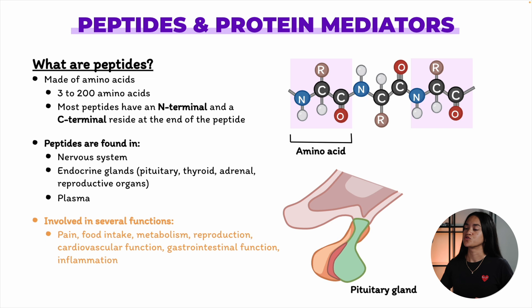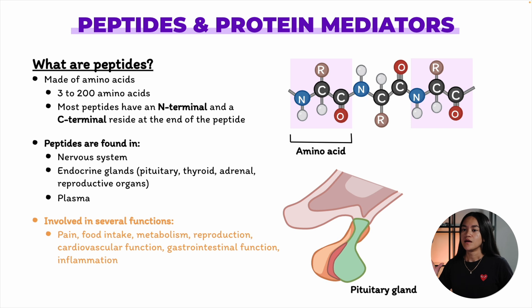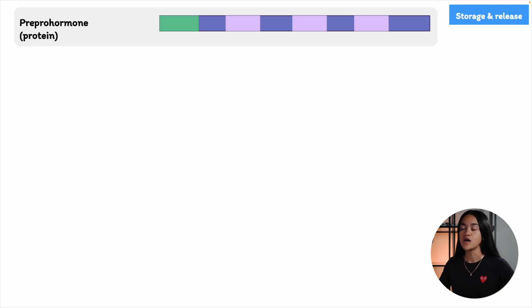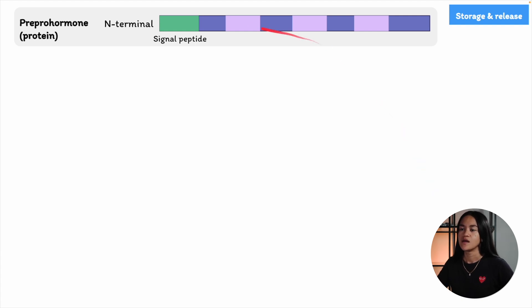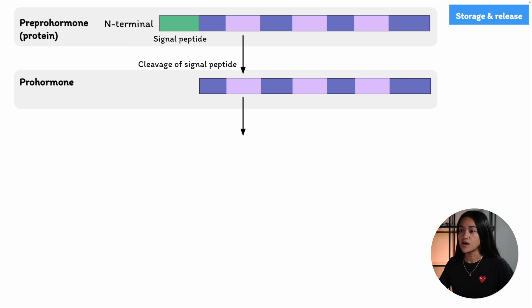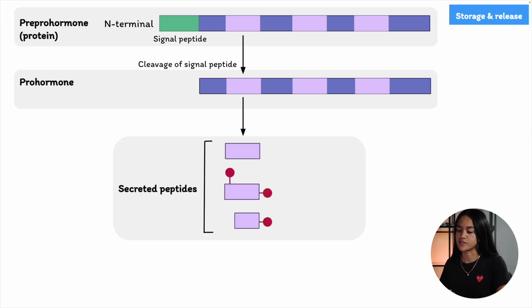Let's move on to peptide storage and release. Peptide synthesis begins with the creation of a precursor protein, often called a pre-pro-hormone, which contains the embedded peptide sequence. The N-terminal signal peptide is then cleaved to form the pro-hormone. Enzymes known as endopeptidases further cleave the pro-hormone to release the individual peptide fragments. These peptides may be active as they are, or they may undergo additional post-translational modifications such as amidation, sulfation, or further cleavage. A pro-hormone can contain multiple peptides within its sequence.